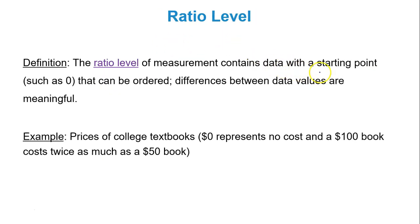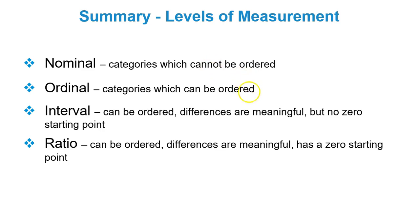Next, the ratio level of measurement. It contains data with a starting point, so you have a zero starting point. The data can be ordered and differences are meaningful. So basically it's the same thing as the interval level except the key thing here is we have a zero starting point. So like prices of college textbooks. You have a zero starting point where zero represents no cost and you can compare data values. Like a $100 book costs twice as much as a $50 book. So you're able to work with the data and make comparisons. There's a zero starting point. That's the key for ratio. There is a zero starting point.